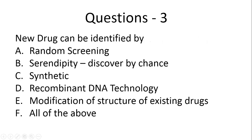Question three: a new drug can be identified by — random screening, serendipity/discovery by chance, synthetic methods, recombinant DNA technology, modifications of structure of existing drugs, or all of the above. The best answer is all of the above — all these methods can be used for developing a new drug.